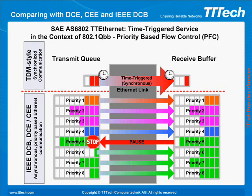Time-triggered traffic can be seen as the highest priority traffic even though it is not based on any priority scheme, and all asynchronous traffic is lower priority. While asynchronous priority-based communication allows only coarse-grained bandwidth partitioning, bandwidth reservation for time-triggered streams is fine-grained.